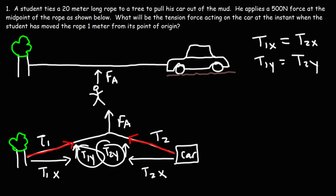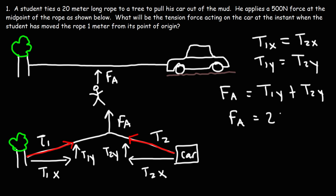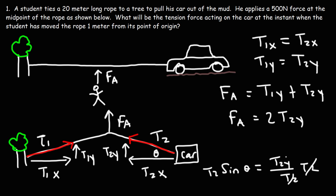The vertical tension forces in the y-direction are created by the applied force that the student applies, so the applied force is equal to the sum of the two tension forces in the y-direction. Because they equal each other, we can say the applied force is twice T2y. Using trigonometry (SOHCAHTOA), sine θ equals T2y divided by T2 — sine is opposite over hypotenuse. Multiplying both sides by T2, we get T2y = T2 × sin θ, so the applied force equals 2 × T2 × sin θ.